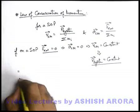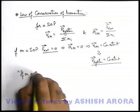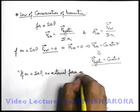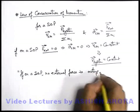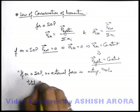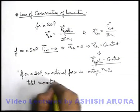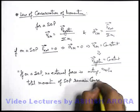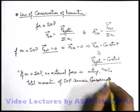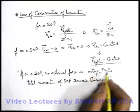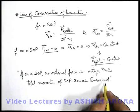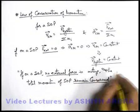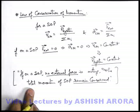Let's define it in words: if on a system of particles no external force is acting, the total momentum of the system of particles will remain conserved. So if no external force is acting on a system of particles, the total momentum of the system of particles will remain conserved. This is called the law of conservation of momentum. Let's have some basic examples based on the law of conservation of momentum.